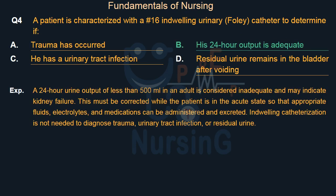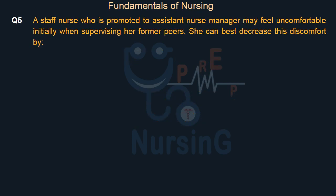A 24-hour urine output of less than 500 milliliters in an adult is considered inadequate and may indicate kidney failure. This must be corrected while the patient is in the acute state so that appropriate fluids, electrolytes, and medications can be administered and excreted. Indwelling catheterization is not needed to diagnose trauma, urinary tract infection, or residual urine.